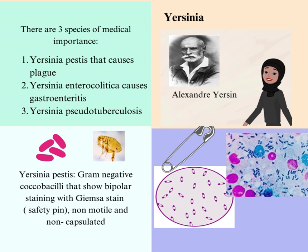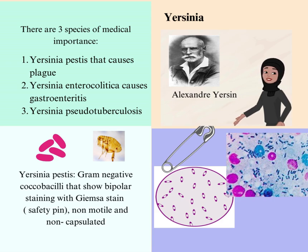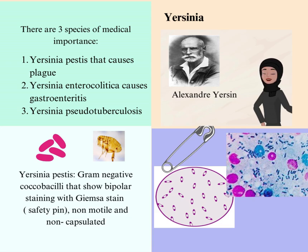There are three species of medical importance of Yersinia: Yersinia pestis that causes plague, Yersinia enterocolitica which causes gastroenteritis, and Yersinia pseudotuberculosis. Today we are talking about Yersinia pestis — Gram-negative coccobacilli that show bipolar staining with Giemsa stain, looking like a safety pin, non-motile, and non-capsulated.